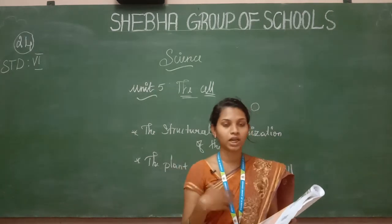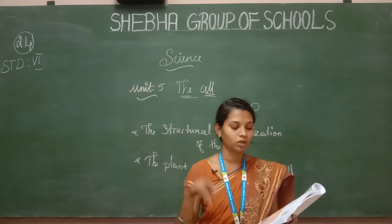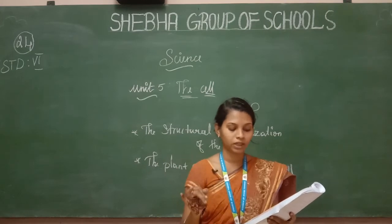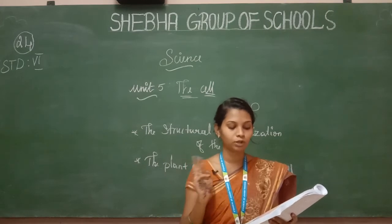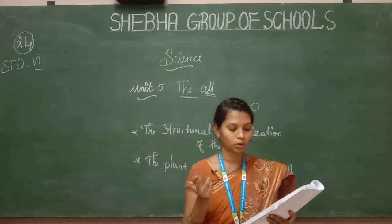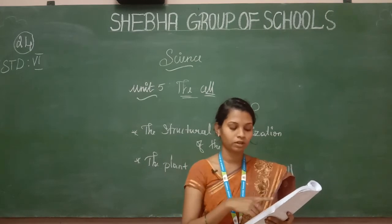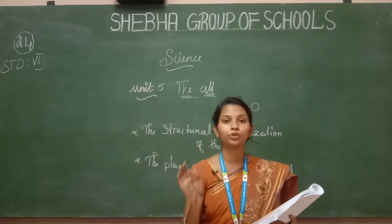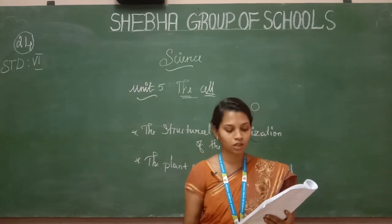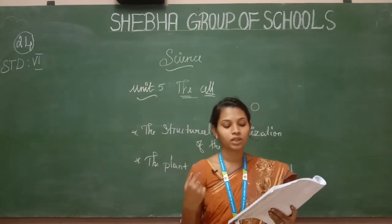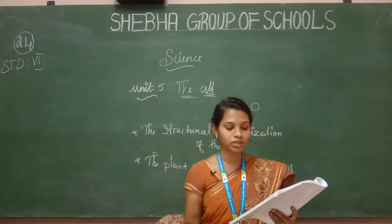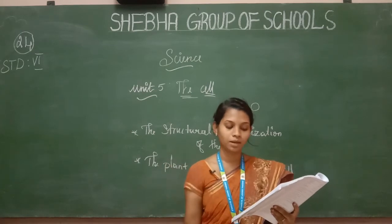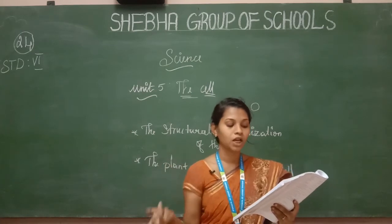Prokaryotic cells include bacteria and cyanobacteria. These have no true nucleus. Eukaryotic cells include plant cells and animal cells, which have a true nucleus.